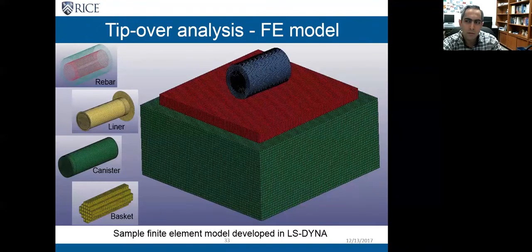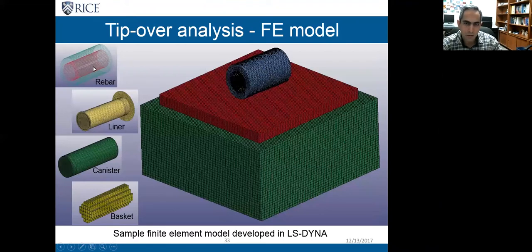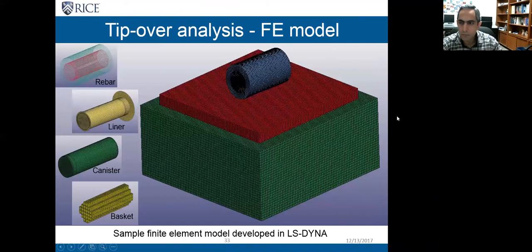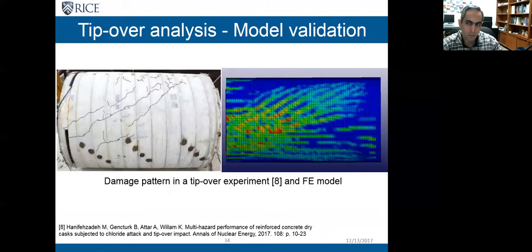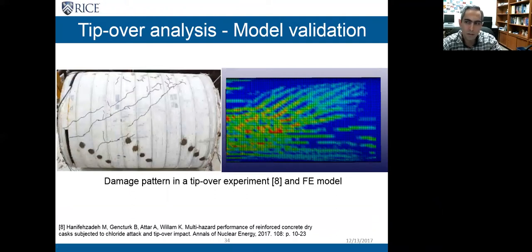For the analysis I used OpenSees. This figure shows one of my models in which I considered the soil, the foundation, and the cask. The cask has different parts: the concrete overpack, reinforcement, the liner, the canister, and the basket. The basket holds the fuel rods and is inserted into the canister, which is inserted into the liner and sealed on top by a lid. Before running this model for probabilistic analysis, I validated it against experimental data: colleagues at the University of Houston performed an experiment on a scale cask, releasing it from a 45-degree angle so it hit its foundation, and reported cracking patterns, vertical accelerations, and stresses.